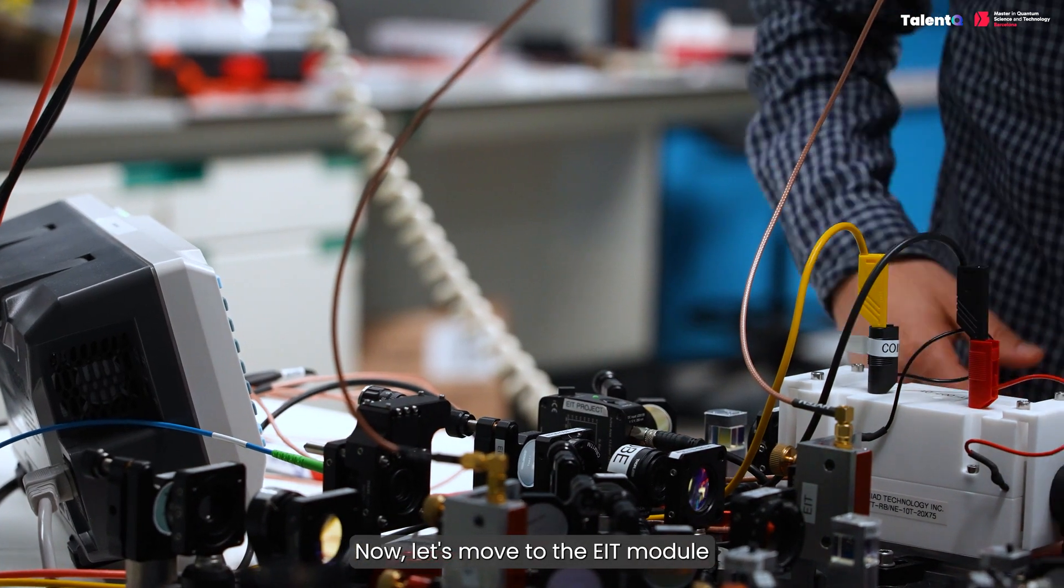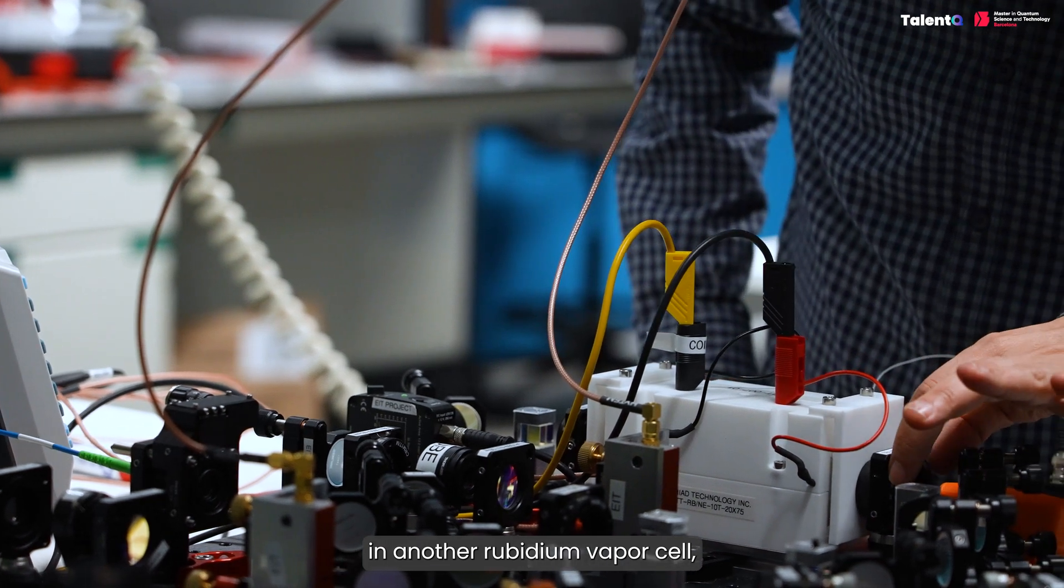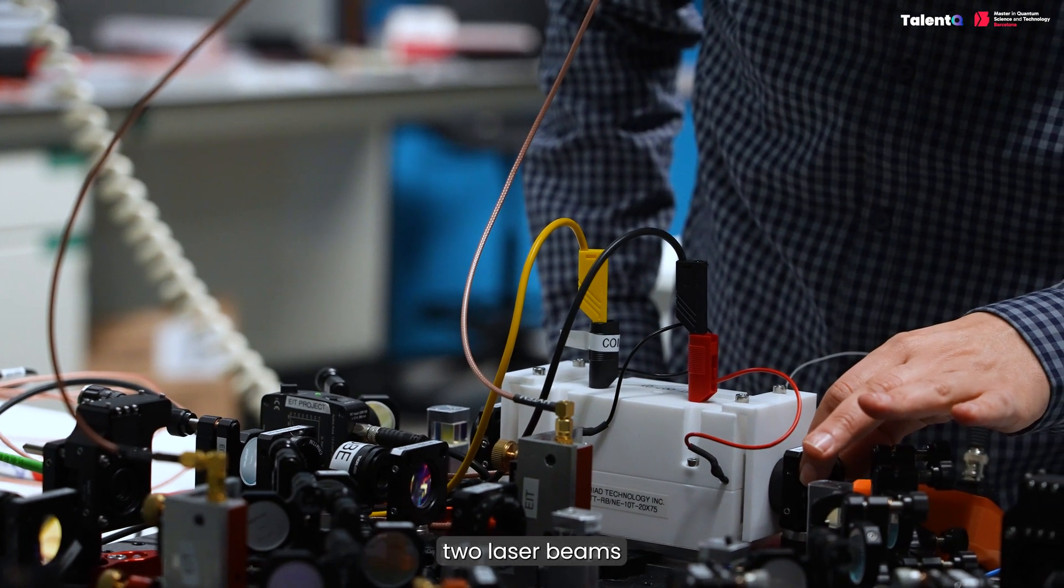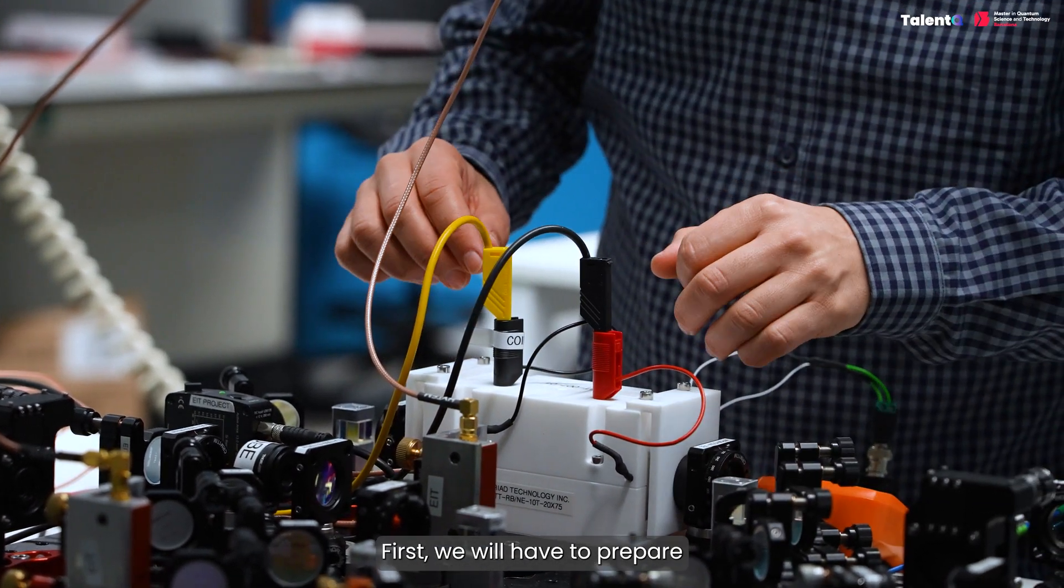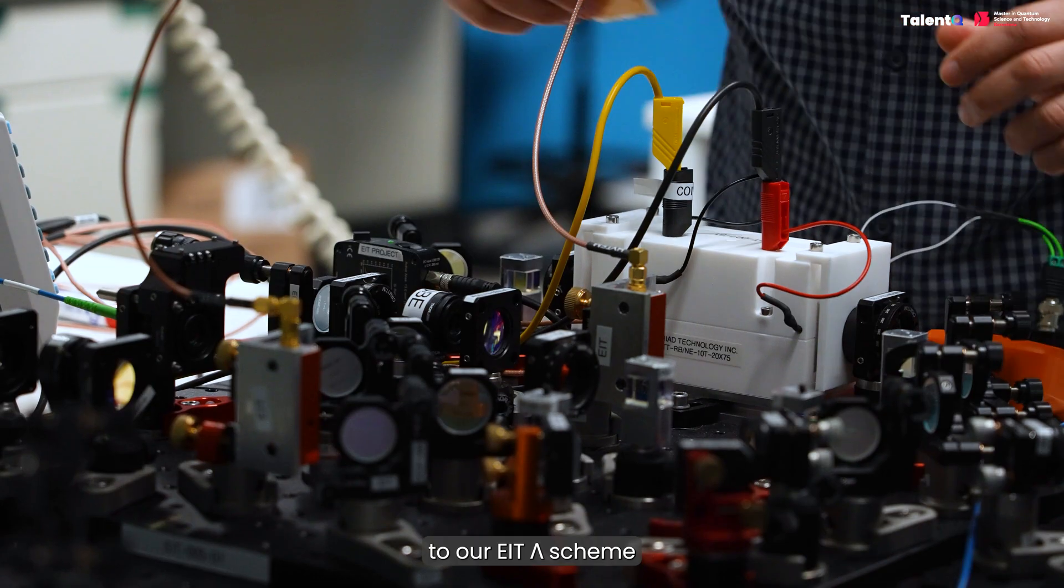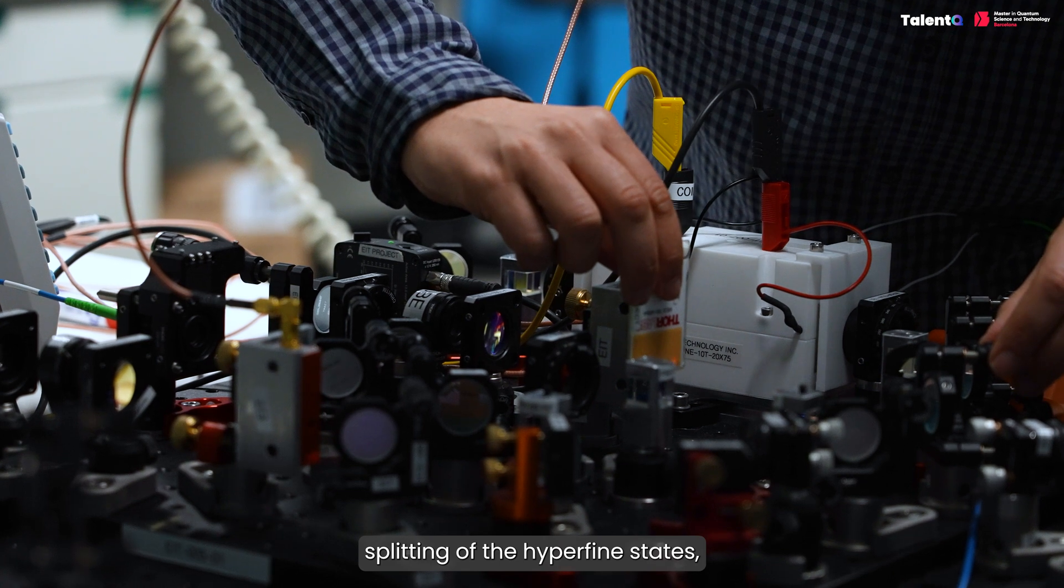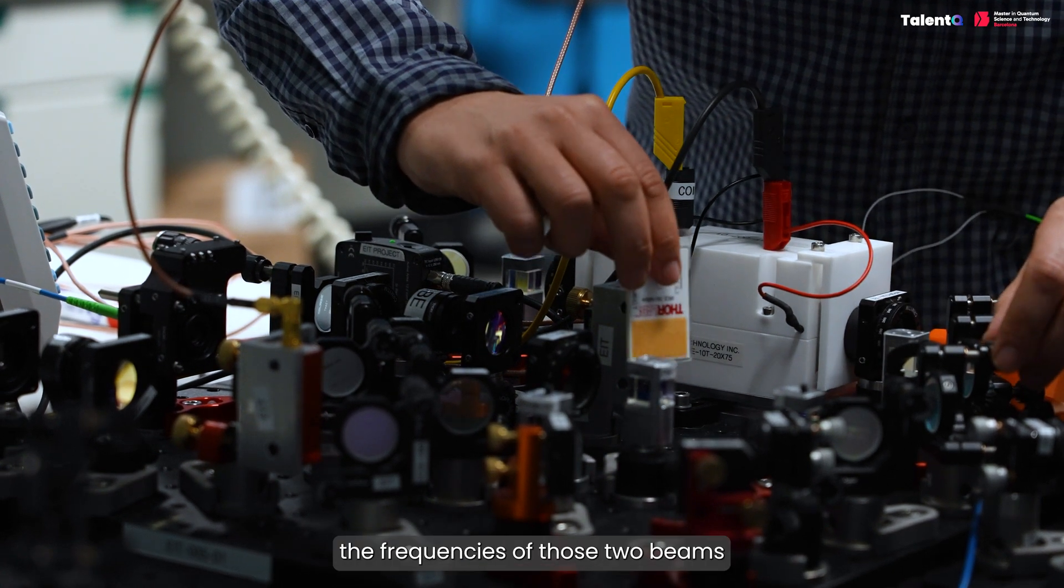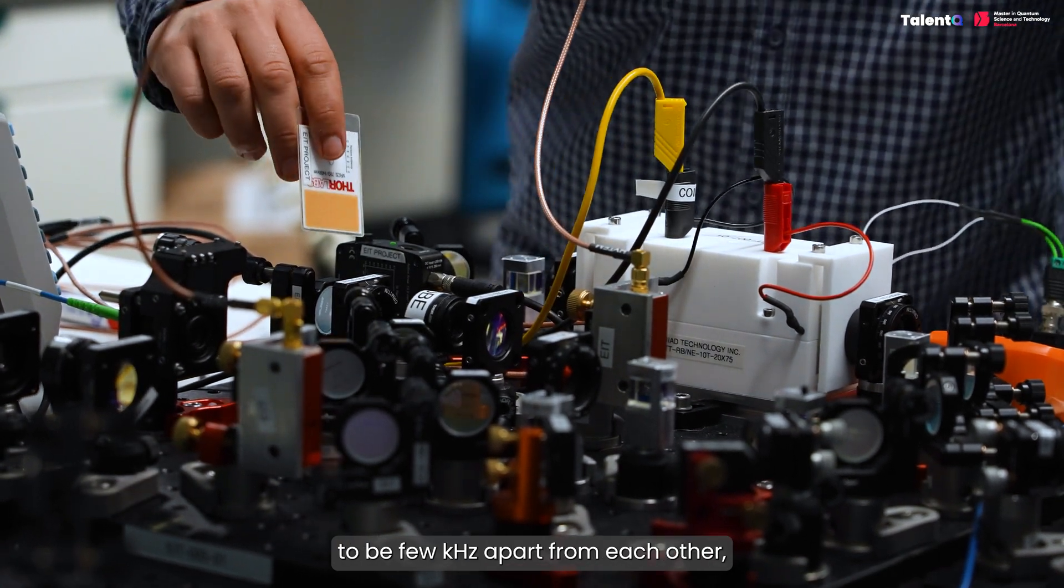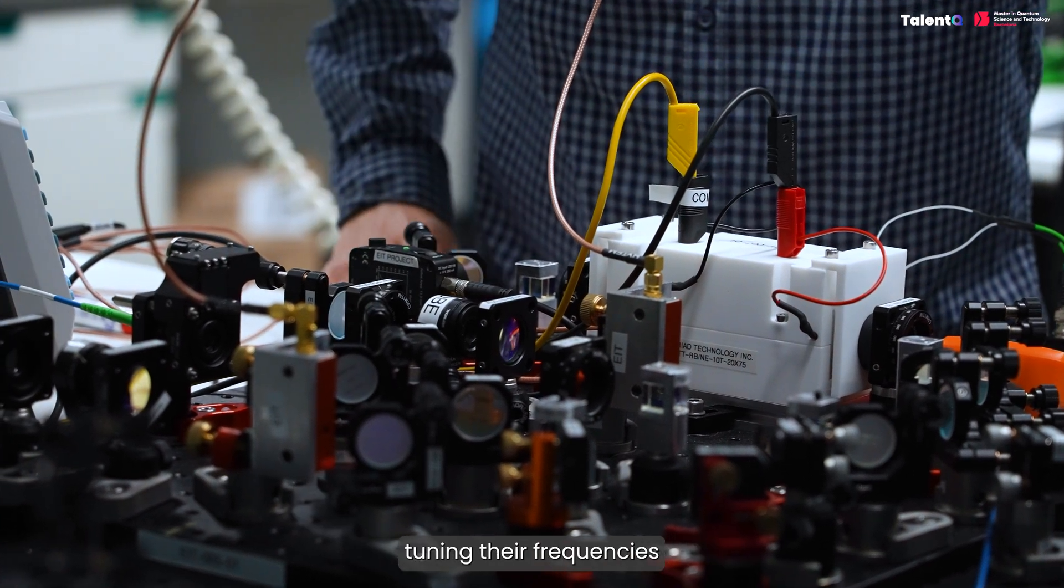Now, let's move to the EIT module. Here, the magic will take place in another Rubidium vapor cell, to which we will be sending two laser beams. First, we will have to prepare those two laser beams to our EIT lambda scheme. Due to the finite splitting of the hyperfine states, we will need the frequencies of those two beams to be few kilohertz apart from each other, so we need a way of independently tuning their frequencies.